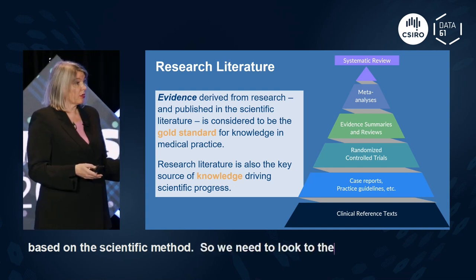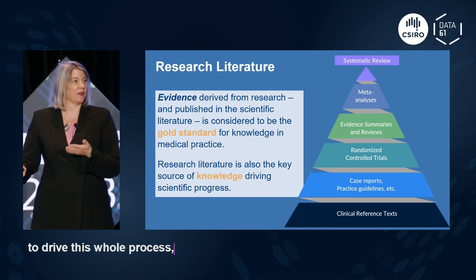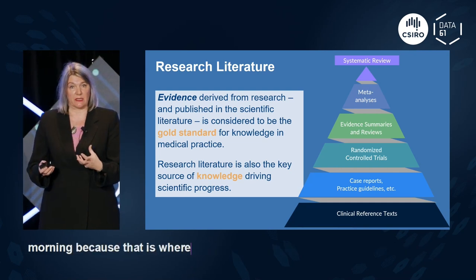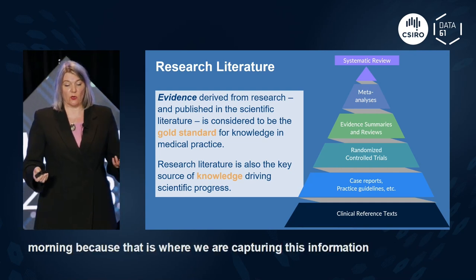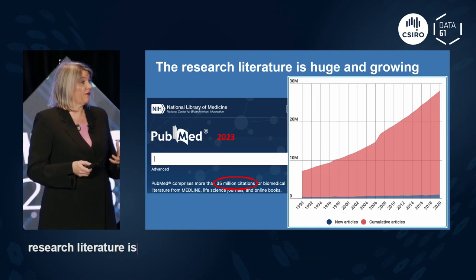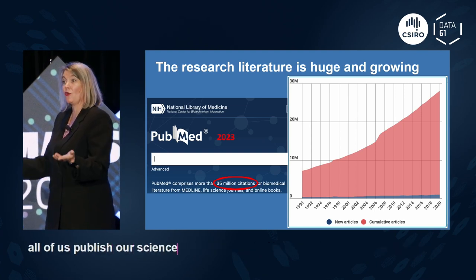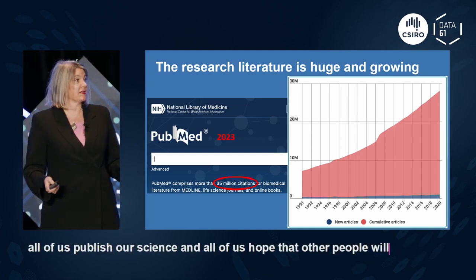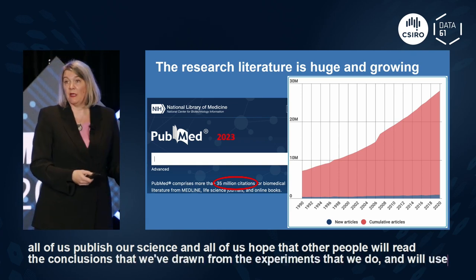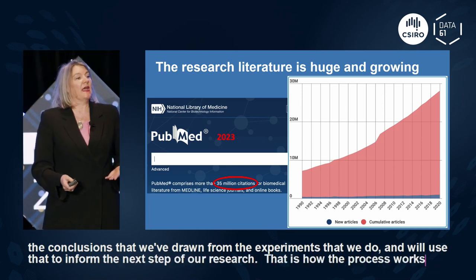This is based on the scientific method, so we need to look to the literature to drive this whole process — this virtuous cycle. The research literature is a really important part of how we do science. All of us publish our science and hope that others will read the conclusions we've drawn from our experiments and use that to inform the next step of research.